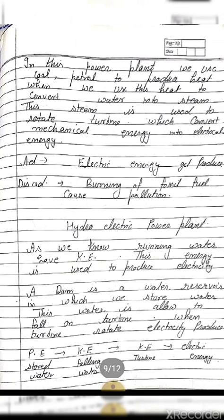In this power plant, we use coal, petrol, etc. to produce heat. This heat converts water into steam. When the steam strikes the turbine, it rotates the turbine, which converts mechanical energy into electrical energy. The advantage of a thermal power plant is that it can produce electric energy. However, the disadvantage is that it uses fossil fuels, which cause pollution. So a thermal power plant can pollute the environment.